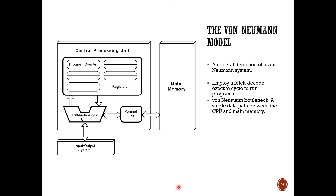So we're going over the von Neumann model one more time. This is the CPU. We have our registers, our ALU which handles arithmetic such as subtraction, addition, multiplication, division, and logic operations like AND, NOR, and so on. We also have our control unit, which is pretty much the central nervous system of the CPU — it controls the instructions and determines when certain instructions are carried out. That's why it's called a control unit.